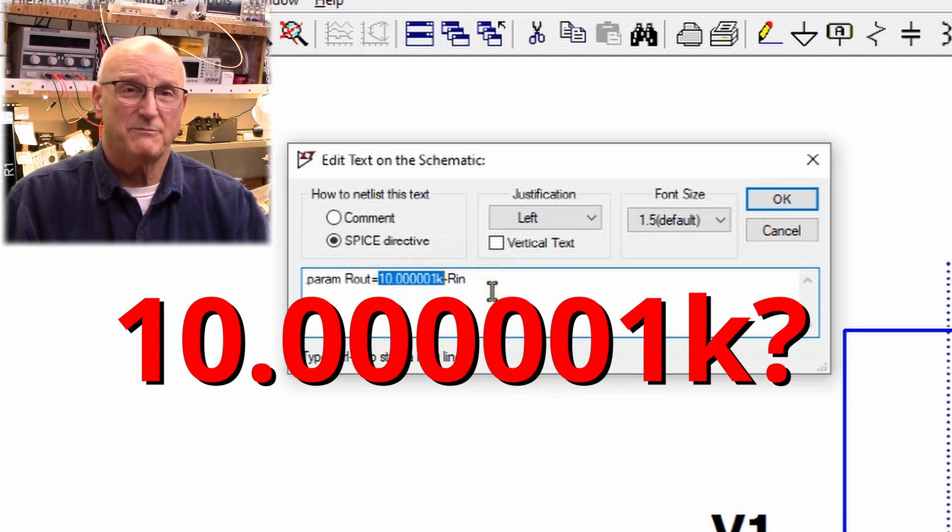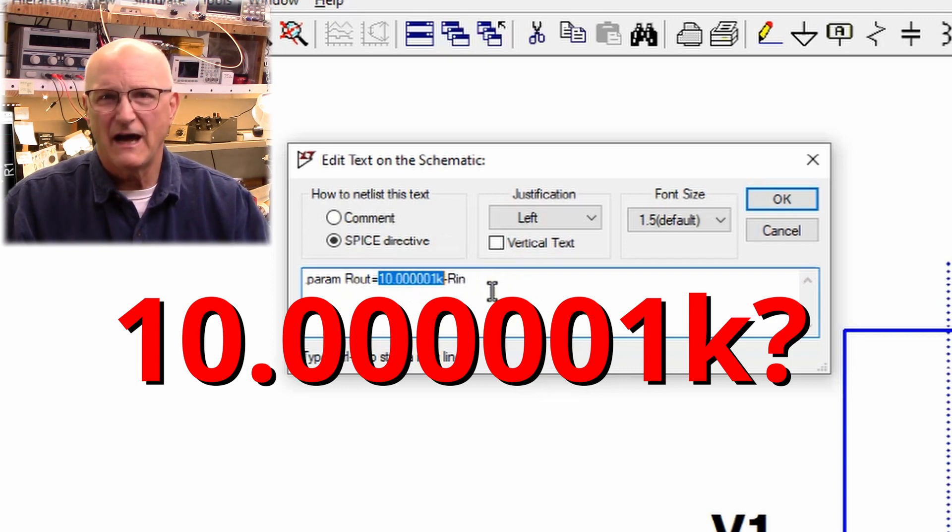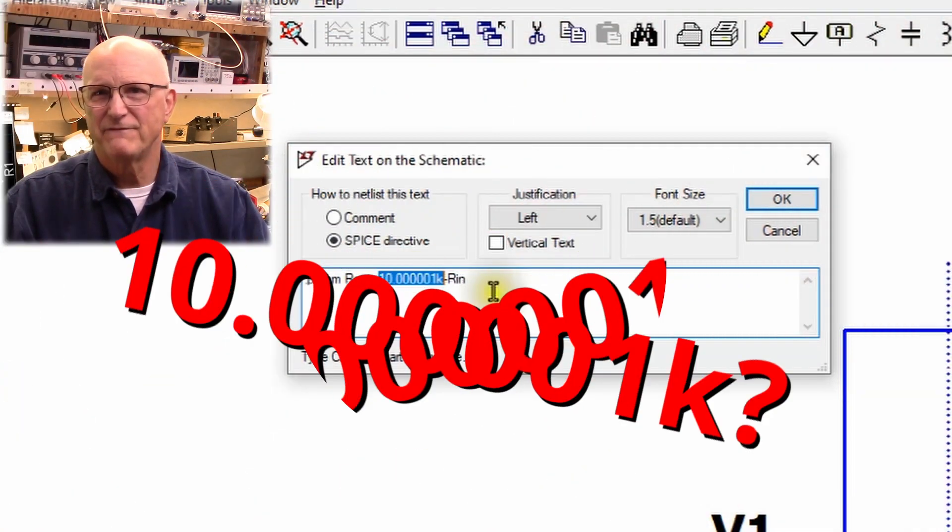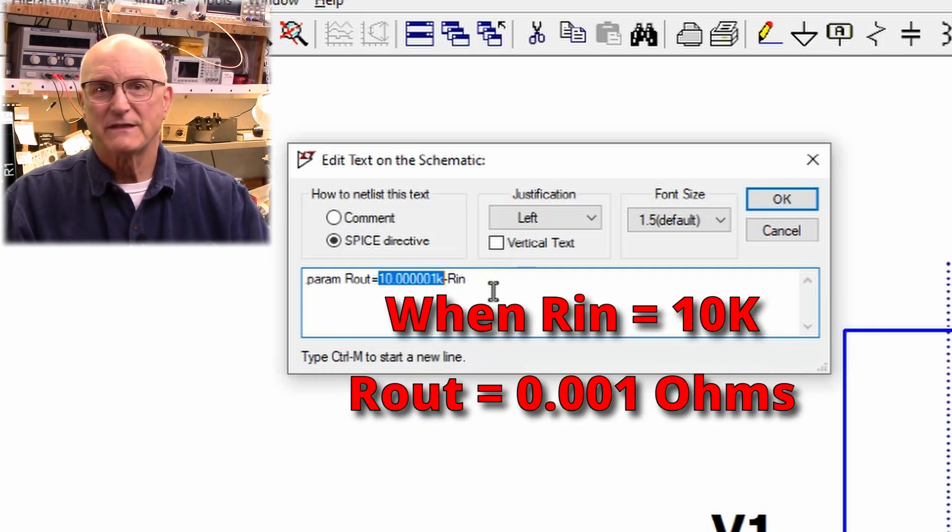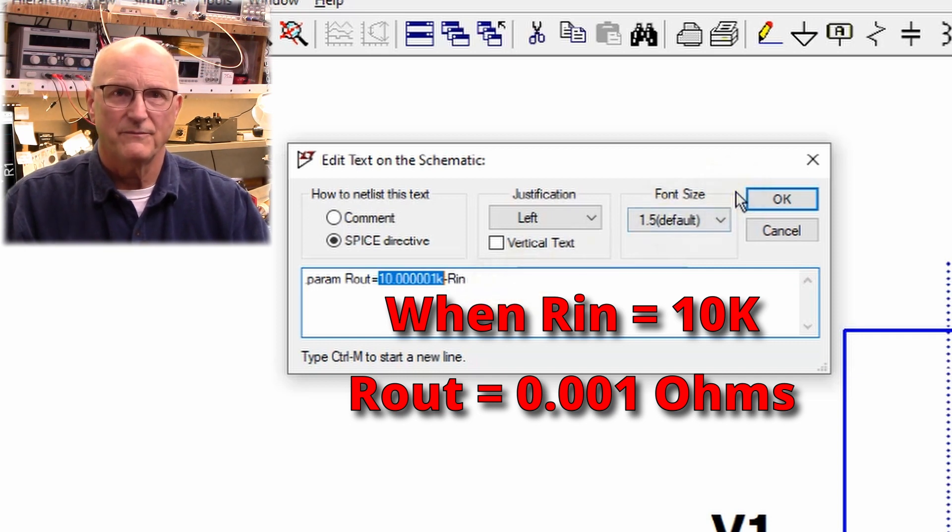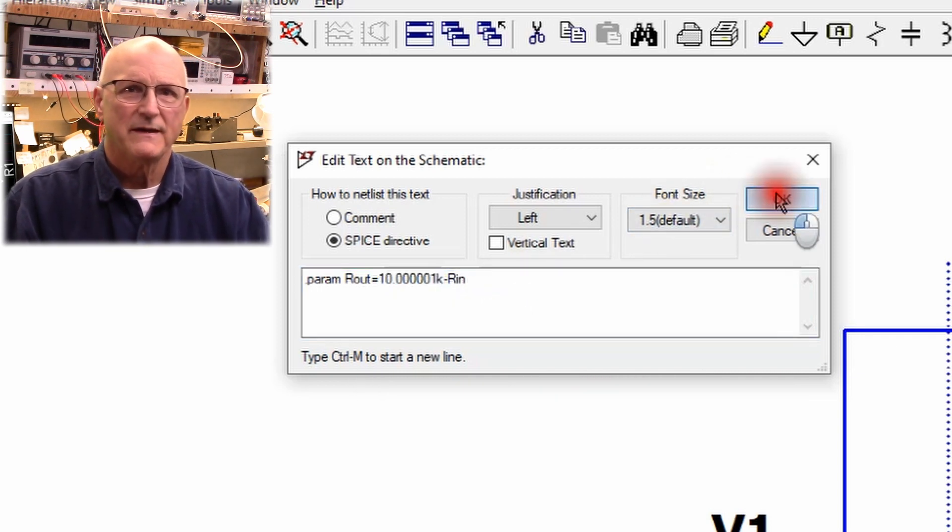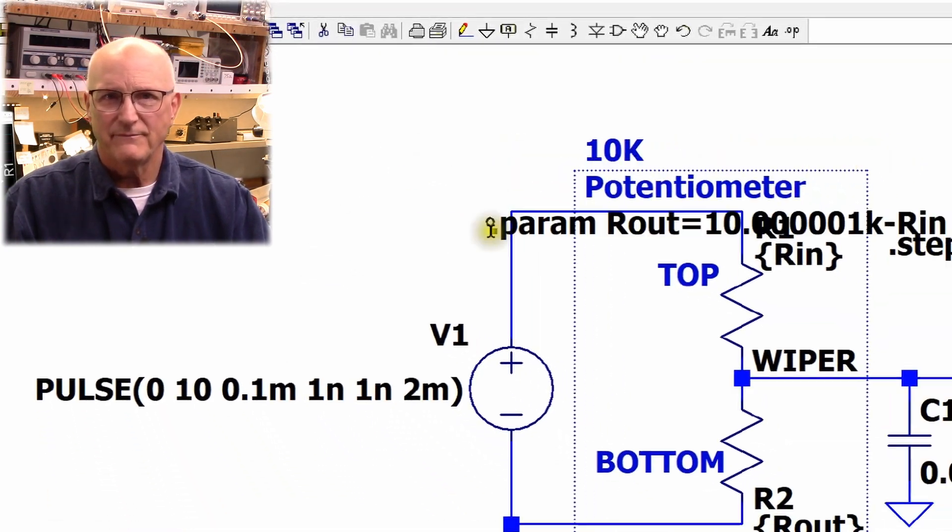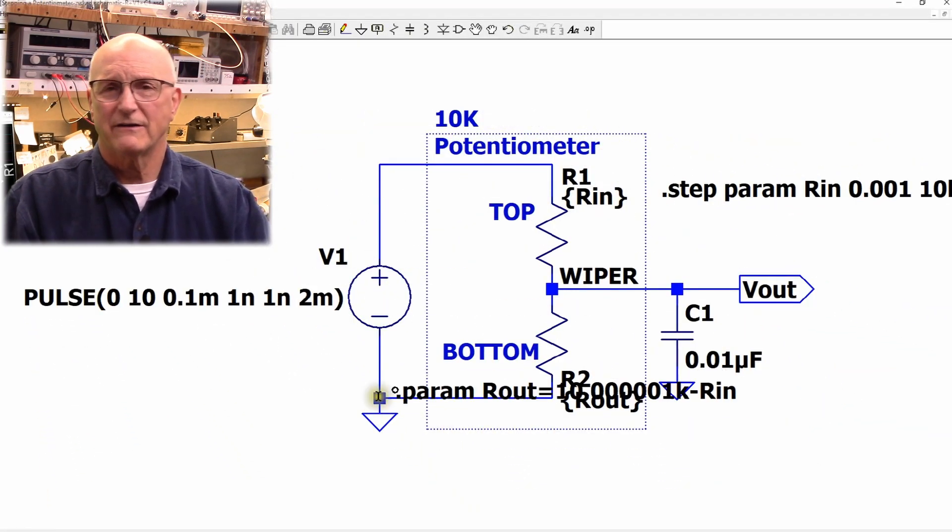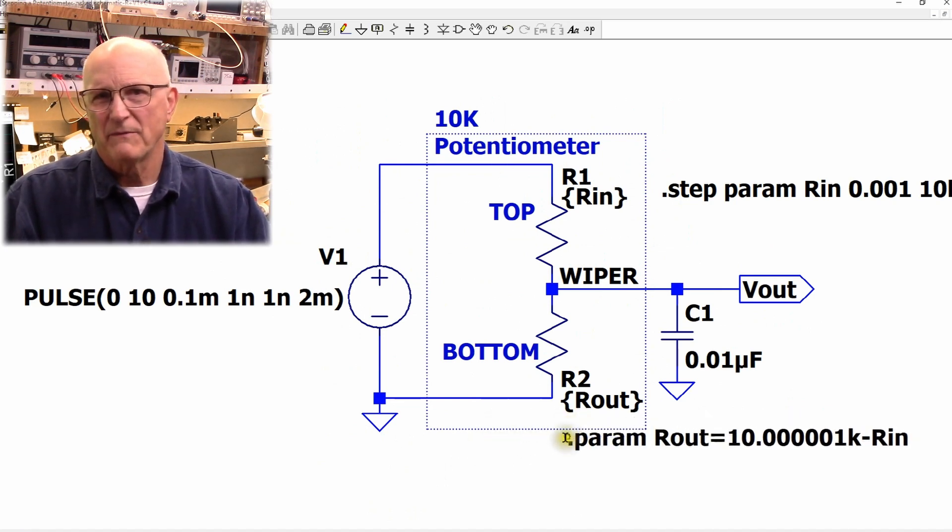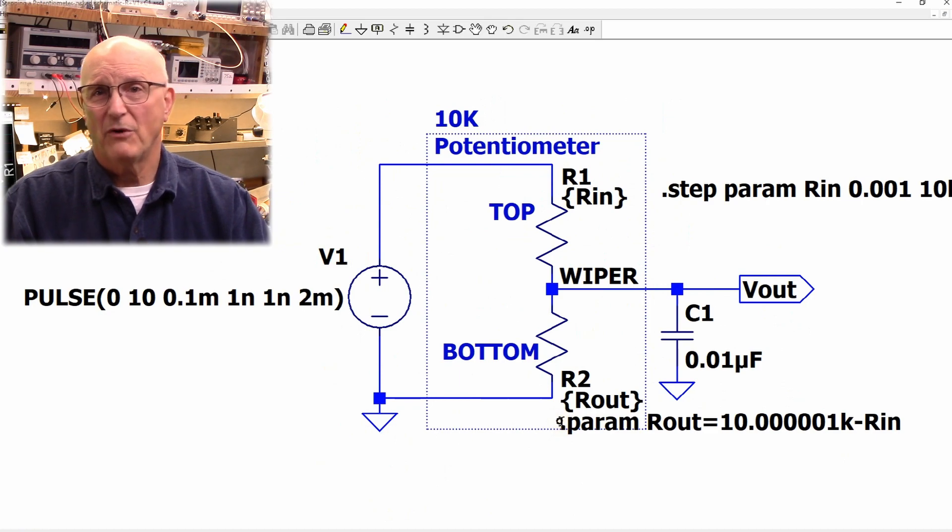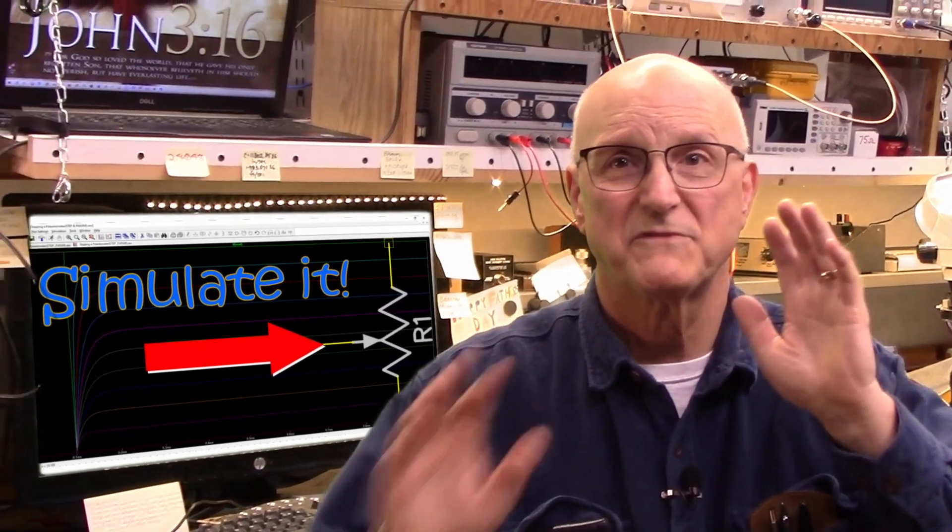In the SPICE directive dialog box, type .param Rout equals 10.0000001k minus Rn. So what's this funky 10.0000001k? Well, like with the .step directive, LTSpice does not like R2 to have a value of zero. When Rn equals 10k, the result of this equation is 1 milliohm, a non-zero value. Once done, click on the OK button. Like before, we are now dragging our .param directive around the screen. Drop it in place somewhere. I like to put it near the component it applies to, in this case, which would be R2. Done.